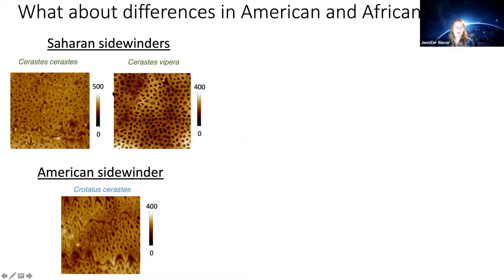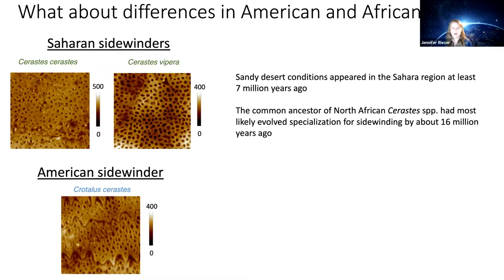We noticed a difference between the Saharan animals — which have basically no anisotropy — and the American sidewinder, which has reduced but not zero anisotropy compared to non-sidewinding snakes. We think this relates to the ages of the deserts. The Saharan desert is at least 7 million years old, giving these animals considerable time to evolve both the behavior and changes in their structure.